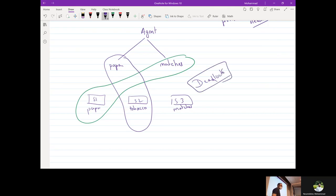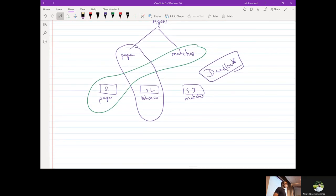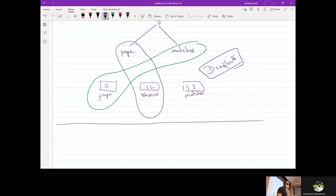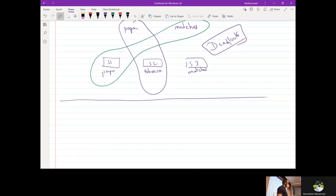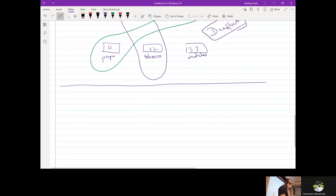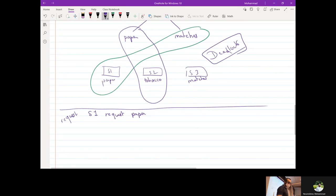So let's see how we can use the banker's algorithm that we just discussed to decide whether which requests we should have given the paper or the matches to S1 or not. So the request is that S1 requests matches.